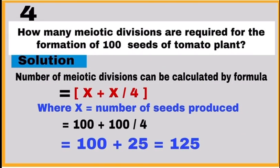Question number 4: To calculate the number of meiotic divisions required for formation of 100 seeds of tomato plant, use the formula given: x plus x divided by 4, where x is the number of seeds produced. The answer is 125 meiotic divisions are required.